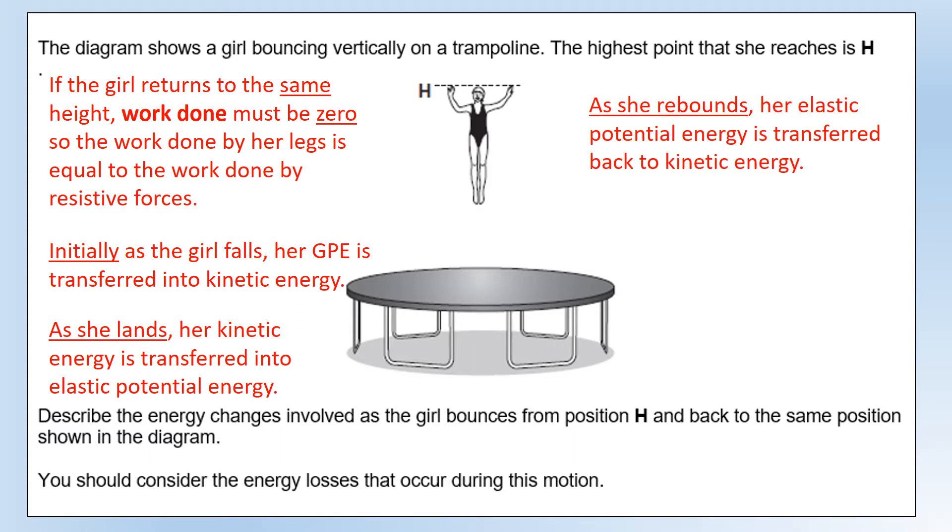As she rebounds and starts going back upwards, this elastic potential energy is transferred back into kinetic energy. Then, when she reaches her maximum height, that kinetic energy will have been transferred back into GP, which is equal to the GP she started with. So that would be how I described the energy transfer going on there.